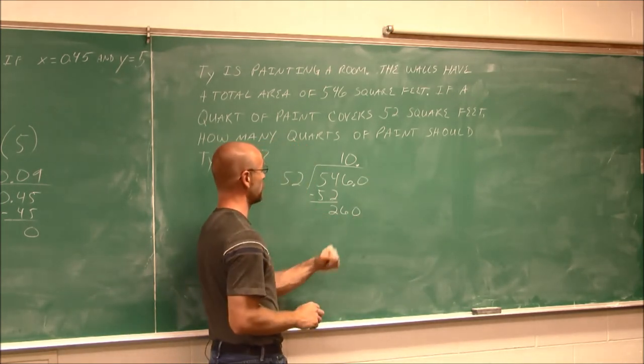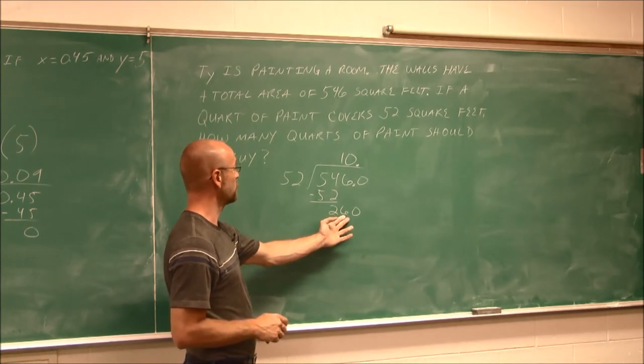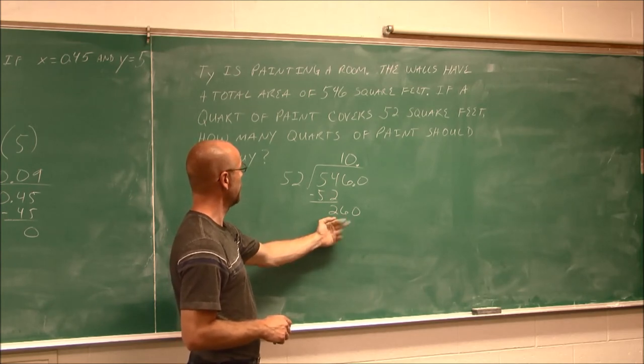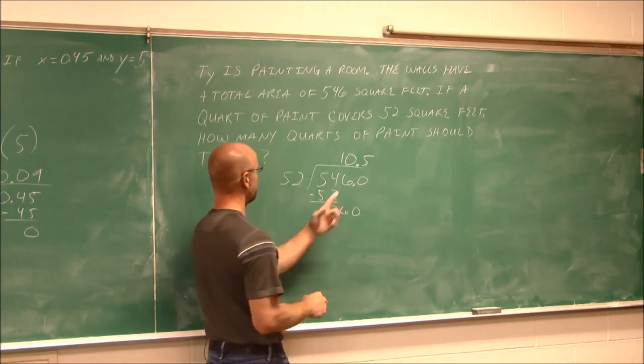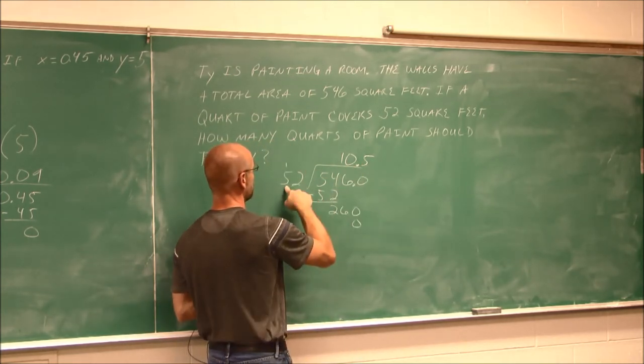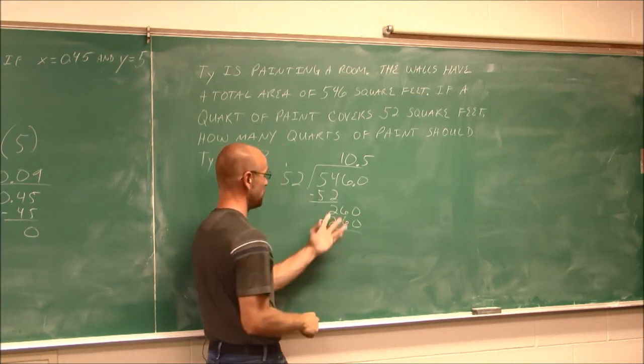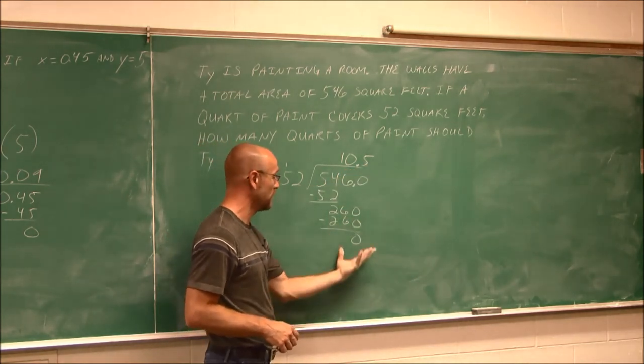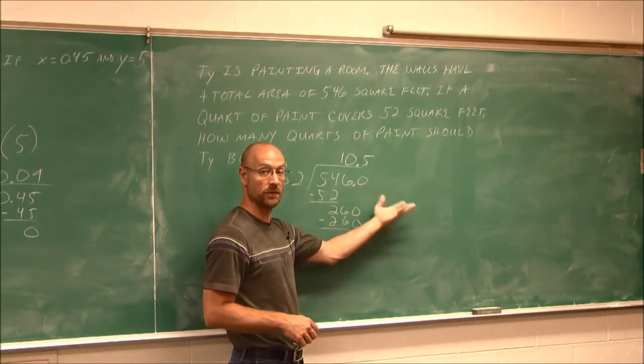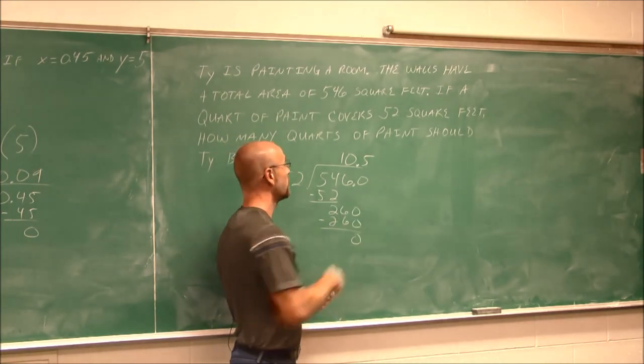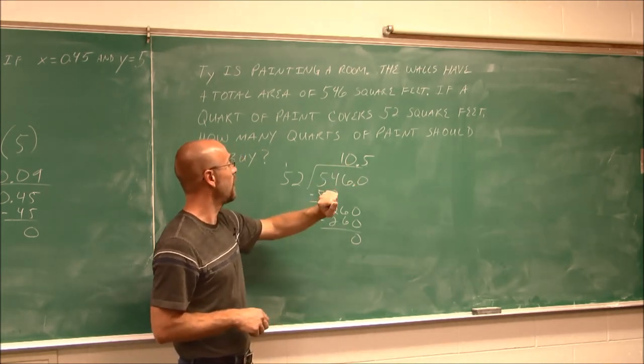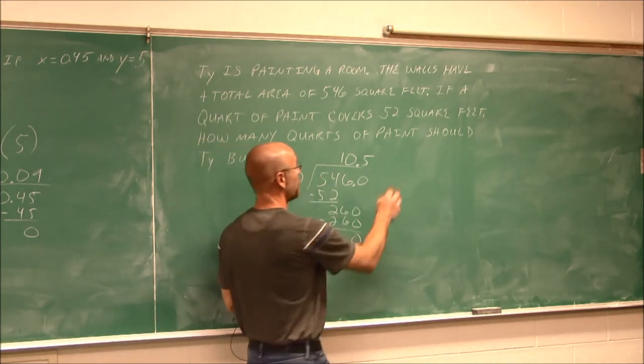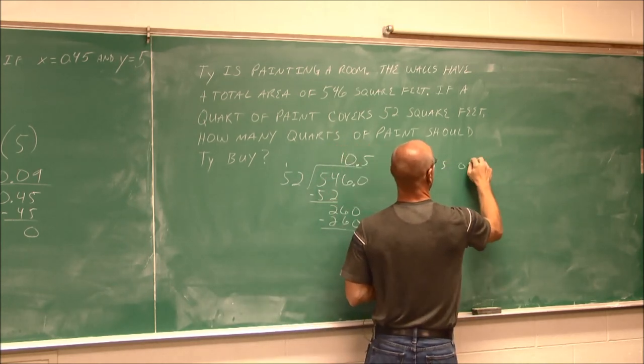So if this is a 0, I can bring down a 0. How many times does 52 go into 260? Let's see, let's say 5 times. 5 times 2 is 10, carry the 1. 5 times 5 is 25, and 1 is 26. Well look at that, we have no remainder. But we needed that decimal to get this value. Well, with no remainder, if we continued the division, 52 goes into 0, 0 times. So we don't need any more 0's. They're just what we call trailing 0's. So how much paint should Ty buy? Ty needs to buy 10 and 1 half quarts of paint.